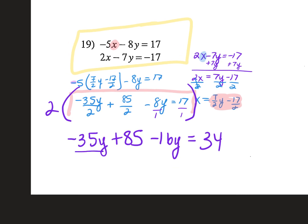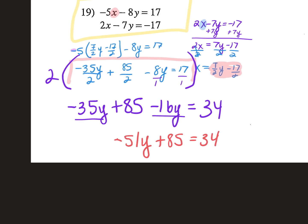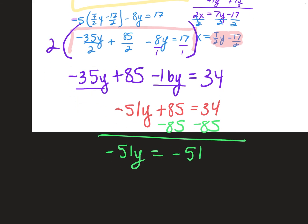Clean this up: negative 35 and negative 16 gives negative 51y plus 85 equals 34. Subtract 85 from both sides: negative 51y equals 34 minus 85, which is negative 51. Divide both sides by negative 51: y equals 1.